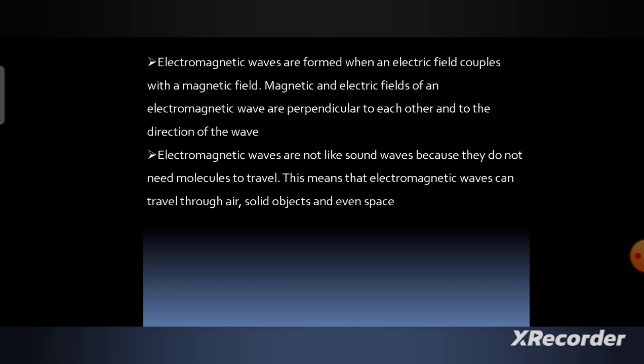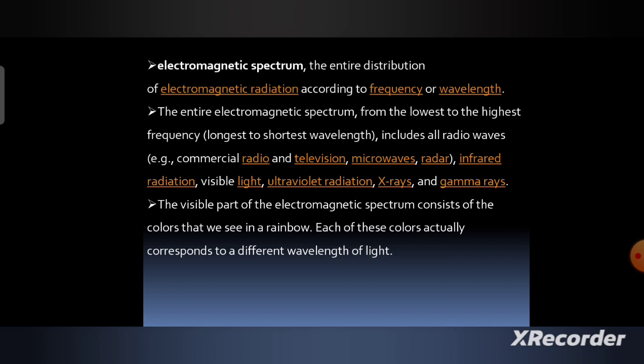Next is the electromagnetic spectrum. The electromagnetic spectrum is the entire distribution of electromagnetic radiation according to frequency or wavelength. The entire electromagnetic spectrum, from the lowest to the highest frequency, or longest to shortest wavelength, includes all radio waves—that is, commercial radio and television, microwave and radar—infrared radiation, visible light, ultraviolet radiation, x-rays, and gamma rays.